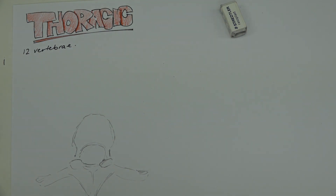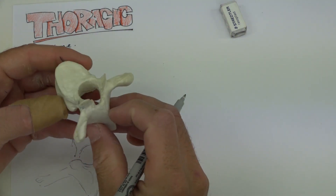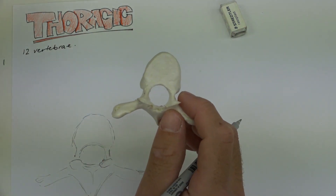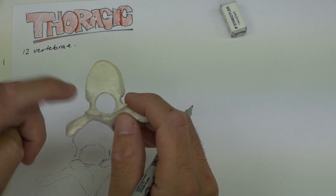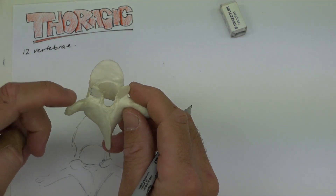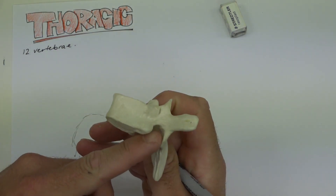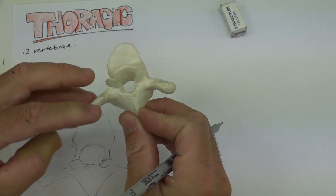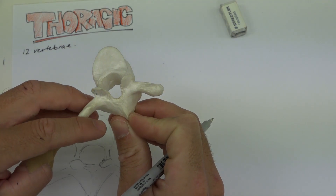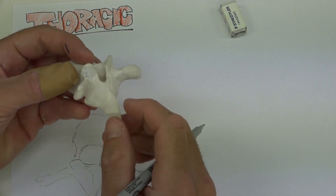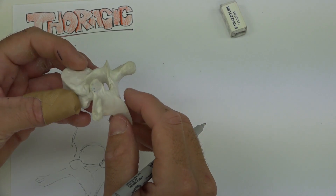If we're talking about the vertebrae to begin with, this is a really good region to study the typical features of a vertebra. Looking at this typical thoracic vertebra, it has all the classic features you would expect. Here we have the vertebral body, the vertebral foramen, the pedicles passing backwards, superior and inferior articular facets, and the transverse process passing out to the side.